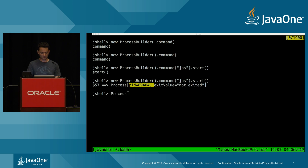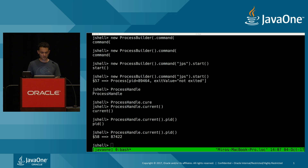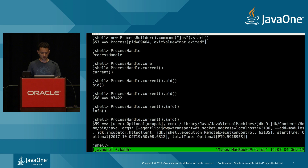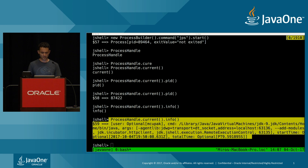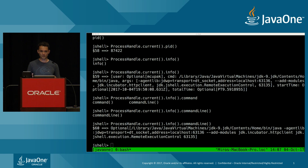JDK 9 provides an interface called ProcessHandle that allows you to get all sorts of information about processes. You can obtain a handle to the current process and easily extract the PID. Through the info interface, you get quite a few convenience methods. One that will be used frequently is commandLine, which tells you exactly how your Java application was launched — the full Java command with all arguments.